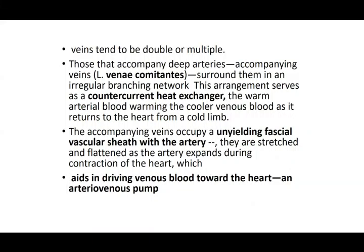Veins that accompany arteries are called vena comitants. Their function is counter-current heat exchange: warm arterial blood warms the cooler venous blood returning to the heart from peripheral limbs. These vena comitants lie side by side maintaining blood temperature. They are covered by a fascial sheet covering the artery and vein together, which also helps venous return — the arterial pulsation within the fascial sheath drives pressure, helping venous blood return toward the heart.